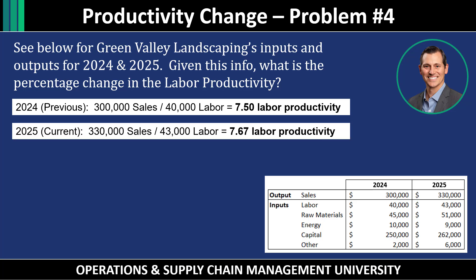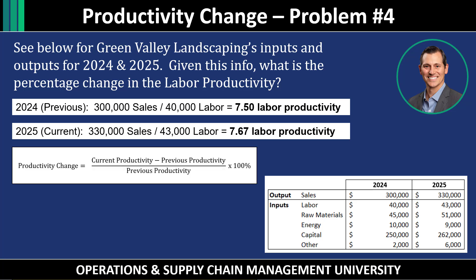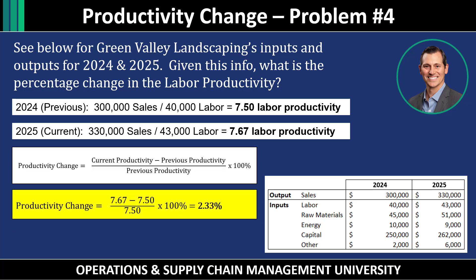For 2024, labor productivity is $300,000 in sales divided by $40,000 of labor, giving 7.5. For 2025, $330,000 in sales divided by $43,000 in labor costs gives 7.67. The productivity change is 7.67 minus 7.5, which is 0.17. Then 0.17 divided by 7.50, multiplied by 100%, gives a labor productivity increase of 2.33%. We did not calculate total productivity, so we don't know if total productivity increased or decreased — this question only asked for the change in labor productivity.